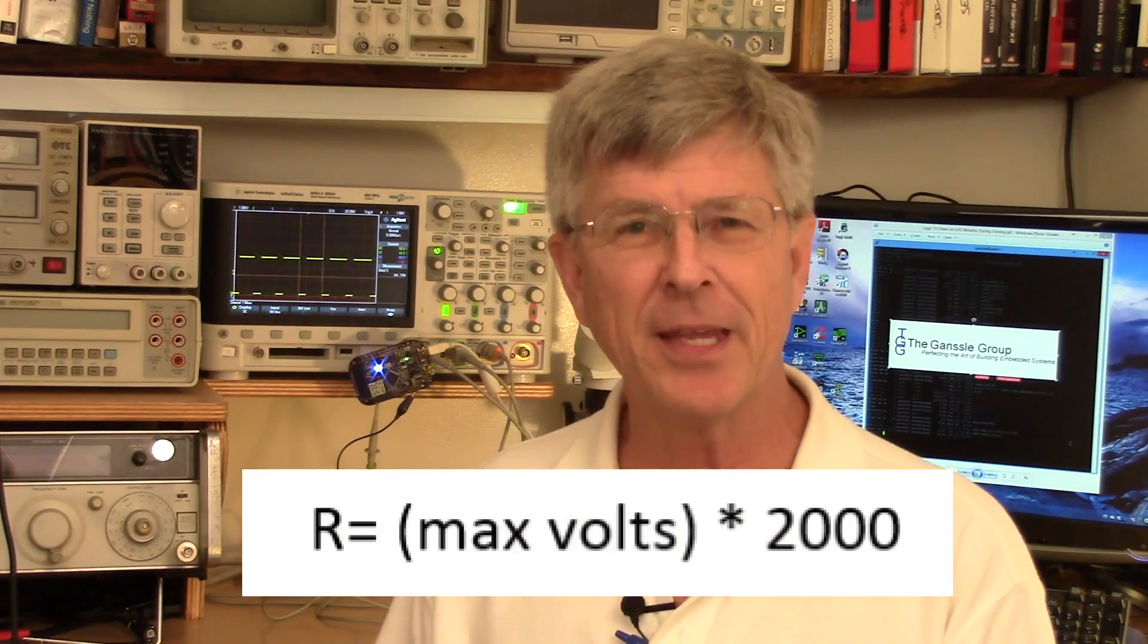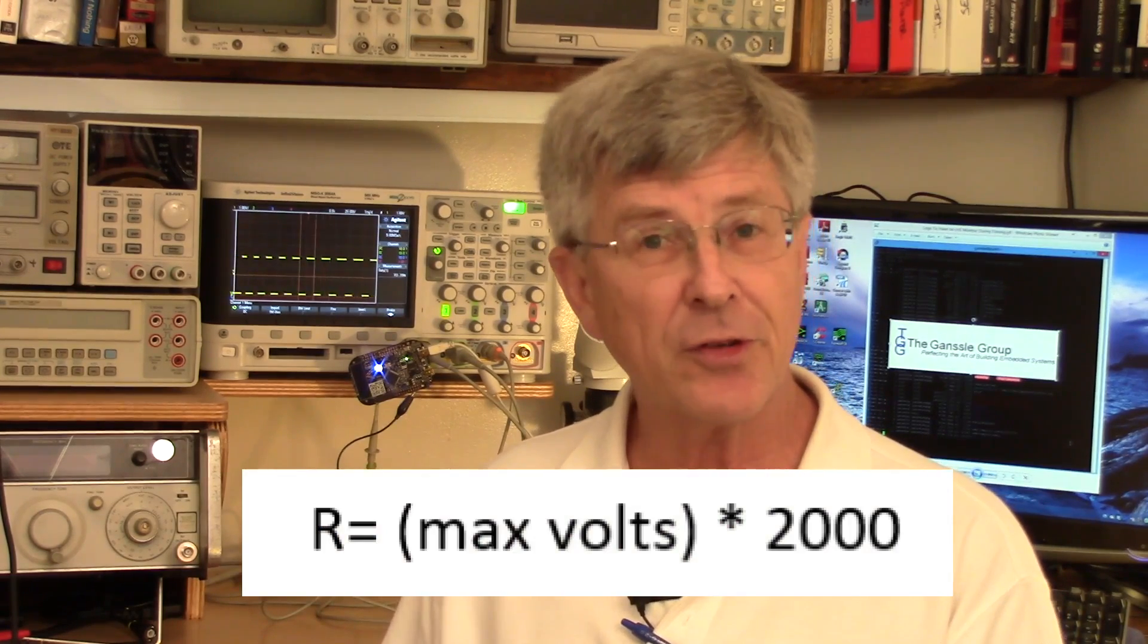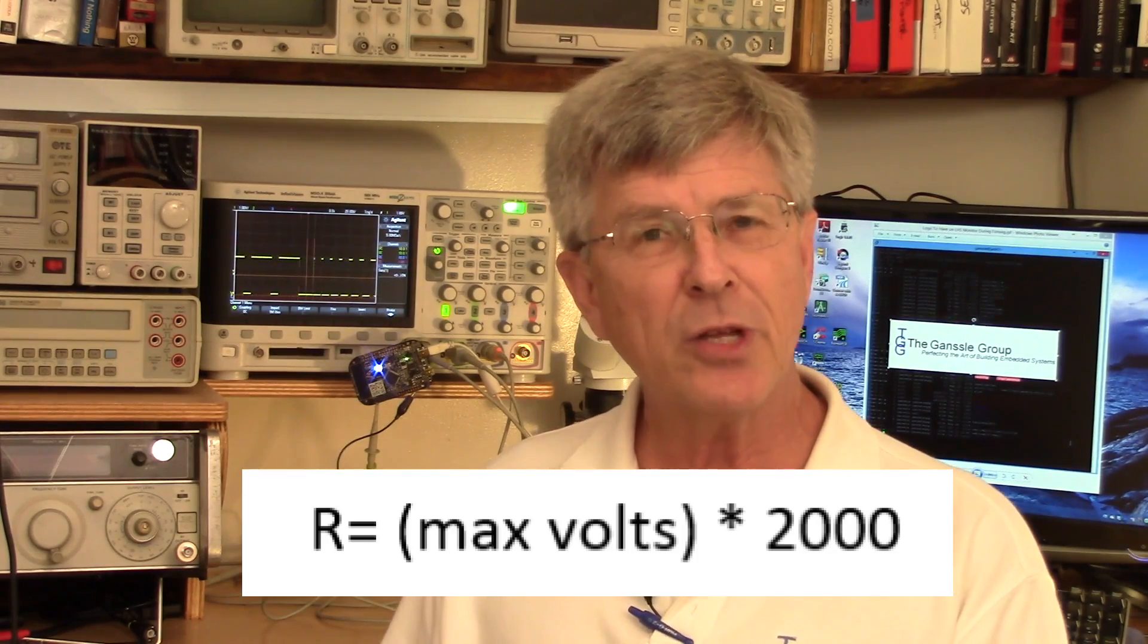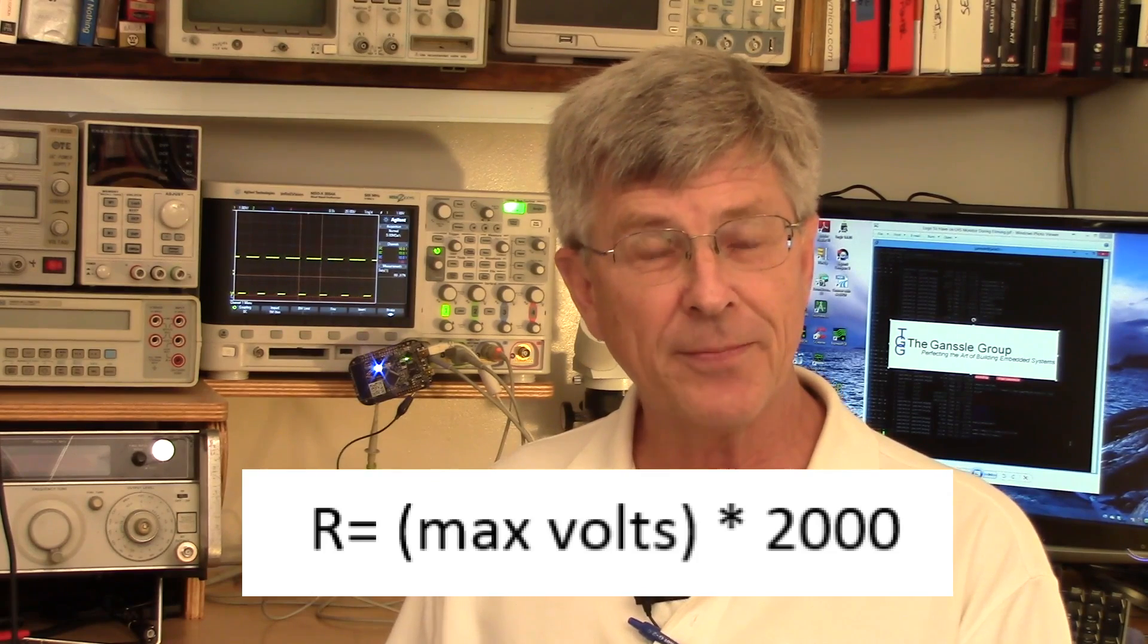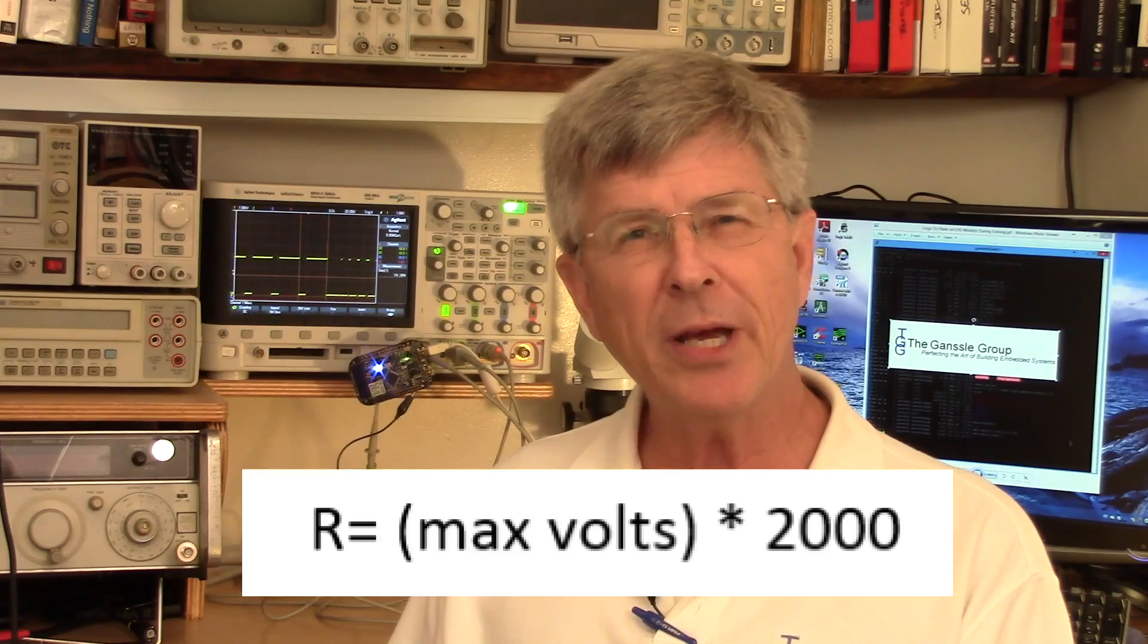The next part of the equation is to solve this equation, which is basically the voltage. Max volts is the voltage of your system. If it's a 5 volt system, it's 5. A 3 volt system, it's 3. And this will give you a resistor. Find a potentiometer that is somewhat bigger than the resistor value that was calculated in this equation.